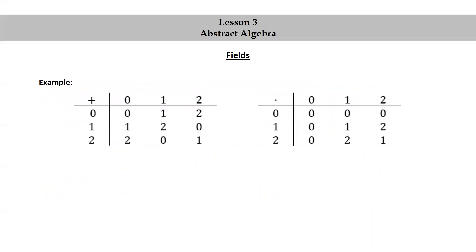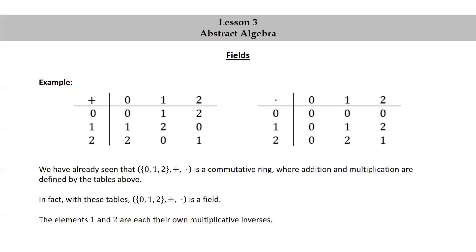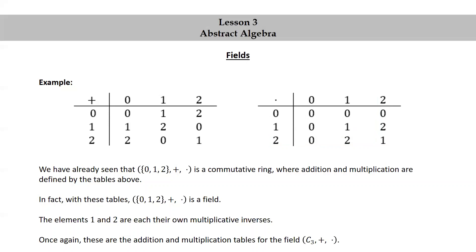Let's look at an example. Consider the following addition and multiplication tables. We have already seen that the set {0, 1, 2} together with addition and multiplication as defined by these tables is a commutative ring. In fact, with these tables, the set {0, 1, 2} is actually a field. The elements 1 and 2 are each their own multiplicative inverses: 1 × 1 = 1 and 2 × 2 = 1, according to the table. These are the addition and multiplication tables for the field C₃, together with clock addition and clock multiplication.